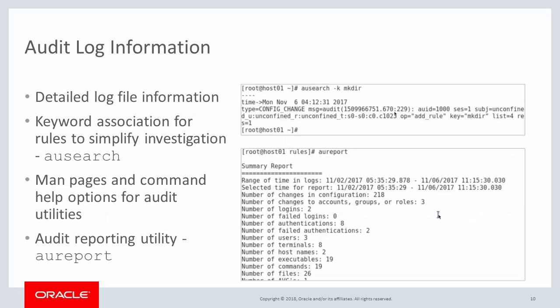The log file containing rule violation information is quite detailed. For those new to auditing, it is important to familiarize yourself with the information it contains and how to read it. Using keyword association when defining rules makes it easier to identify specific rule-related information in the log file, and also when using the ausearch command utility to examine and extract specific log information. Of course, there is man page information for the auditing utilities and help options to provide detailed information for the commands. With the audit report utility, auReport, you can generate easy-to-read summary reports of the information stored in the audit log.